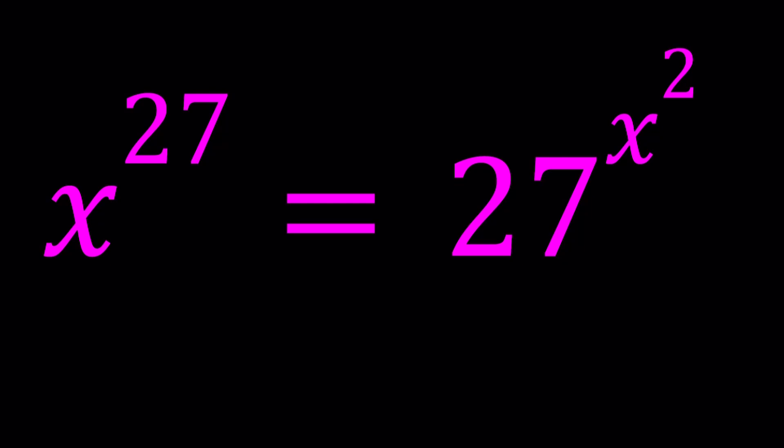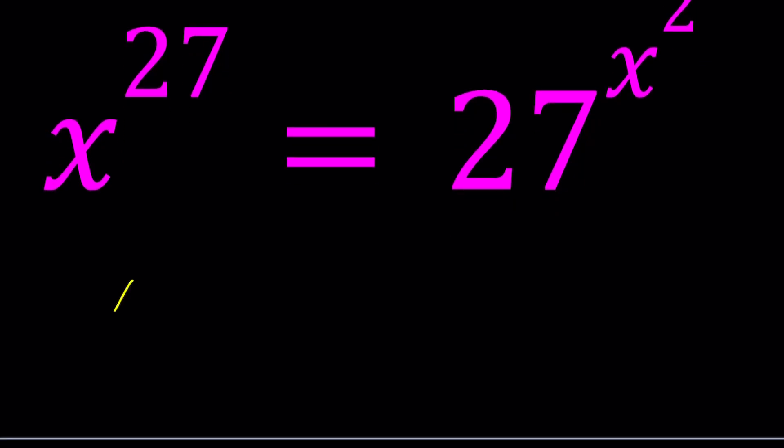At this point, you can go ahead and pause the video and try to guess the solution because one of the solutions can be easily guessed. What about the others? Or is there only one solution? Let's find out. First of all, I'm going to manipulate this equation. We can do this in many different ways. I can write 27 to the power x squared as 27 to the power x to the power x because x times x equals x squared.